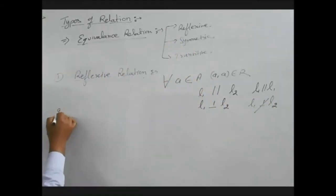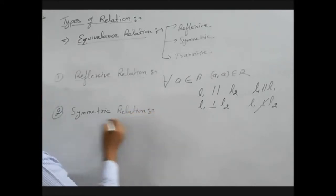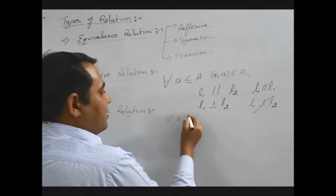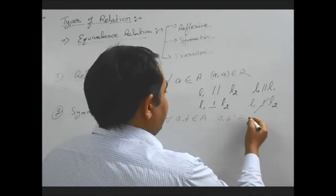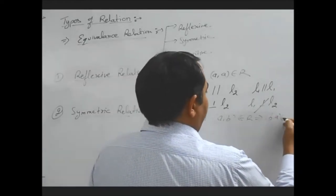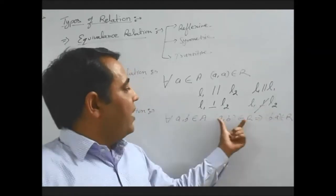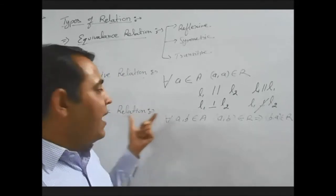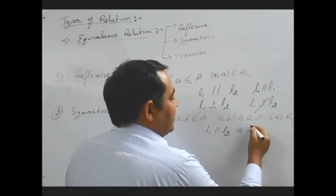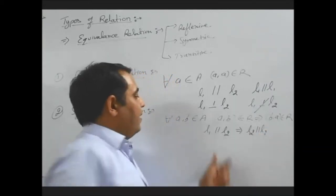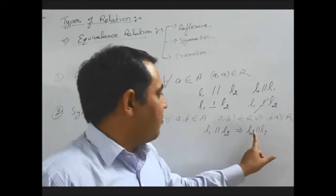The second type of relation is symmetric relation. In symmetric relation, for all elements A, B in set A, if A is related to B by any condition, then B is also related to A by the same relation. If A is related to B, then B is also related to A — if it follows this property, then it is a symmetric relation. For example, if L1 is parallel to L2, then L2 is also parallel to L1. So this type of relation is symmetric.